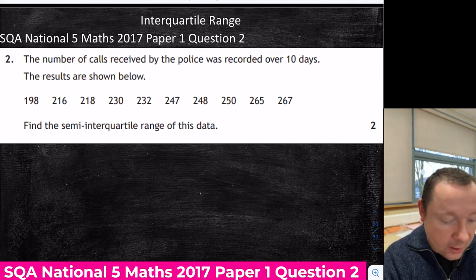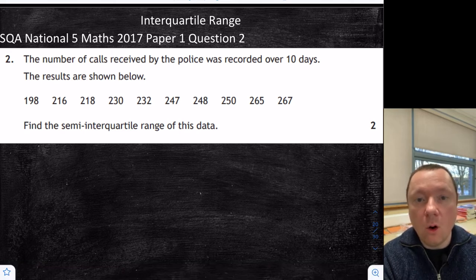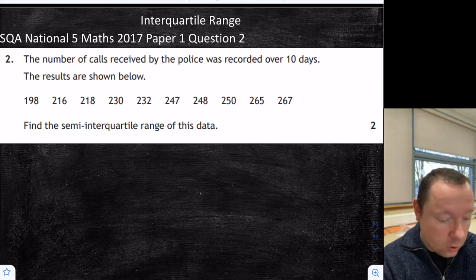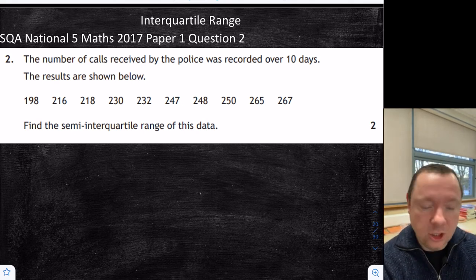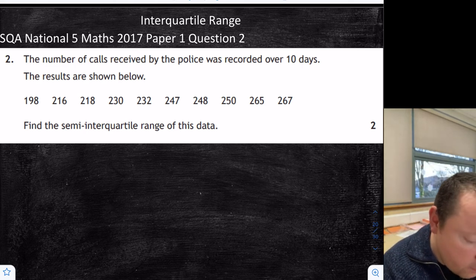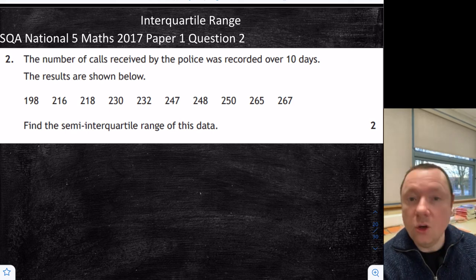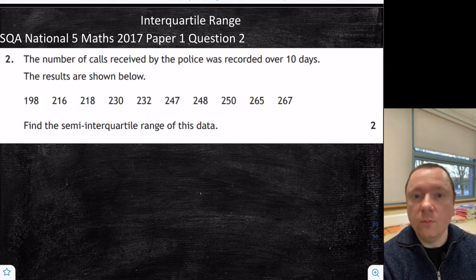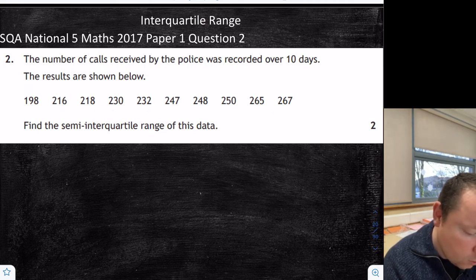Interquartile range — SQA National 5 Maths 2017 Paper 1 Question 2. Just be aware that past paper questions will often say semi-interquartile range for National 5 because it used to be that, but it changed recently to interquartile range. The number of calls received by police was recorded over 10 days. Find the semi-interquartile range of this data. The first thing we need to check is the data needs to be in order from smallest to biggest.